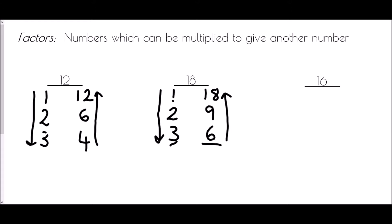Lastly, for 16, we start with 1 and 16. Then try 2: 2 times 8 makes 16. Then try 3 — going through the 3 times table we hit 15 and 18 but not 16, so 3 doesn't work. Then 4: 4 times 4 is 16. This is a special case — we don't have a pair of factors, just 4 times itself. That again signals we've found all the factors.